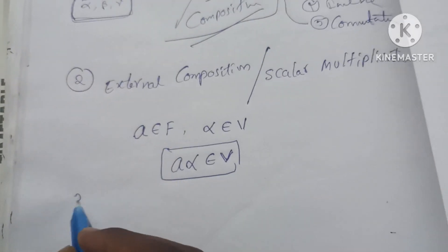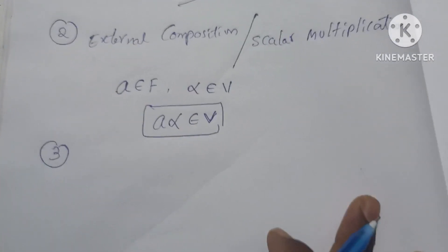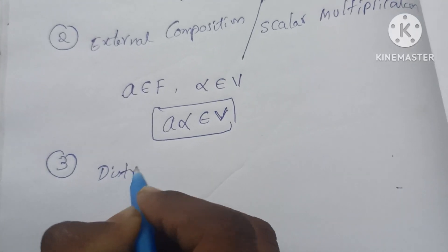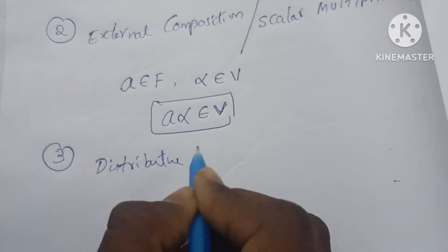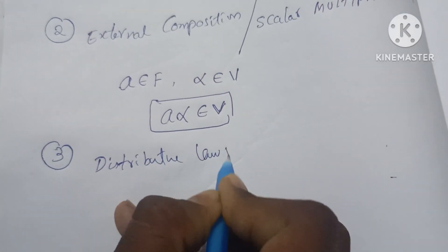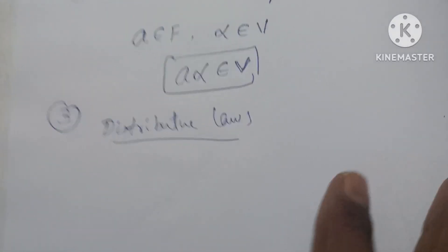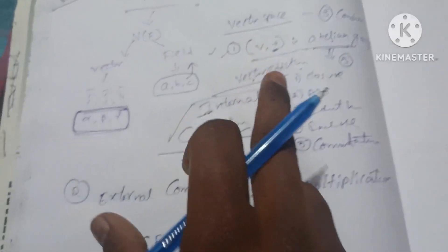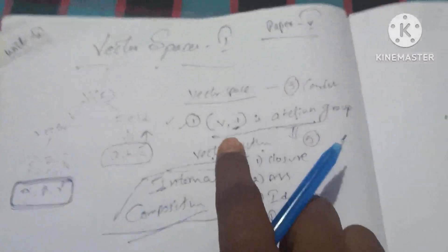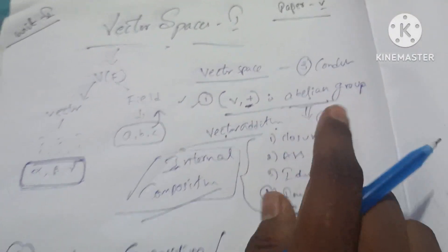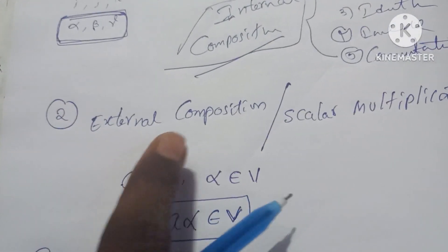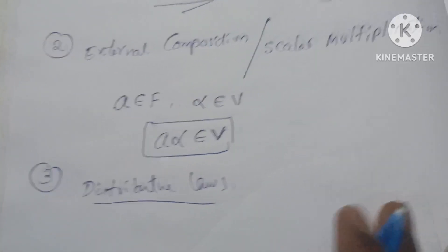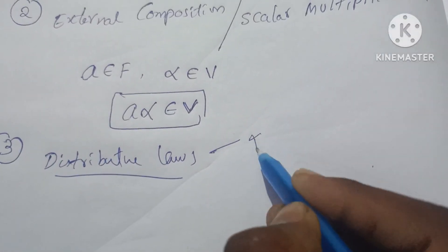Now the third condition: distributive laws. Here we have four conditions under distributive laws. So this is the vector space — 3 conditions in total. The first condition is the abelian group (5 laws), the second condition is external composition, and the third condition is distributive laws, which itself has 4 sub-conditions.